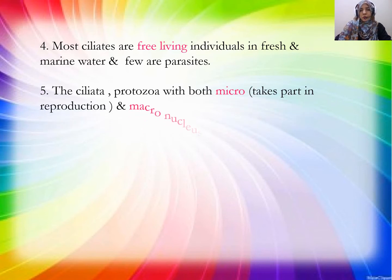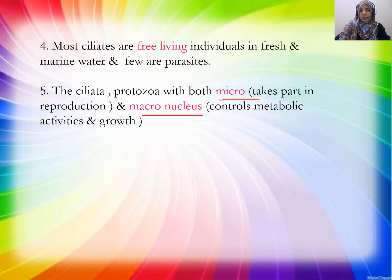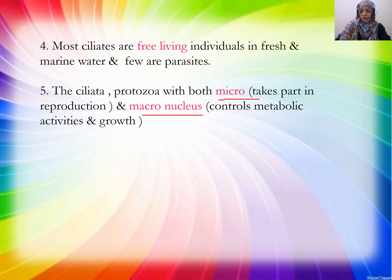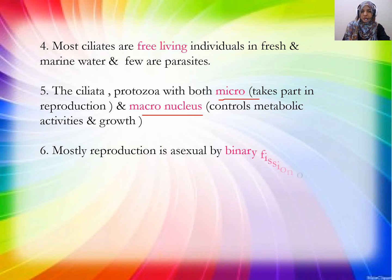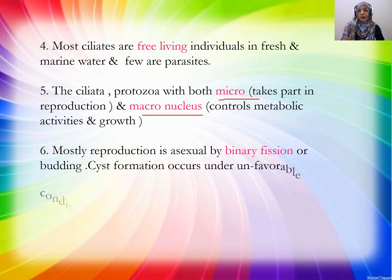Ciliate protozoa — all organisms in this group are called protozoa. Ciliates have two types of nucleus: micronucleus and macronucleus. The micronucleus helps in reproduction, while the macronucleus controls metabolic activities and growth.